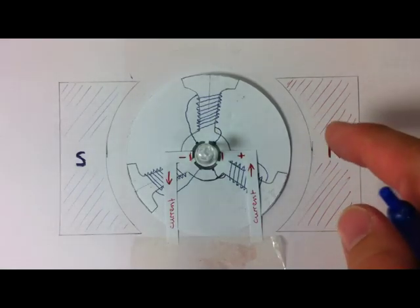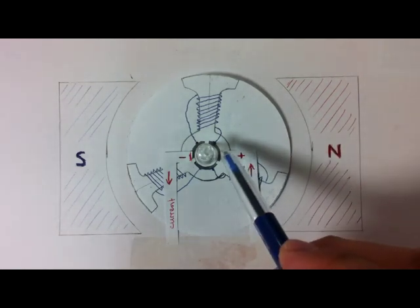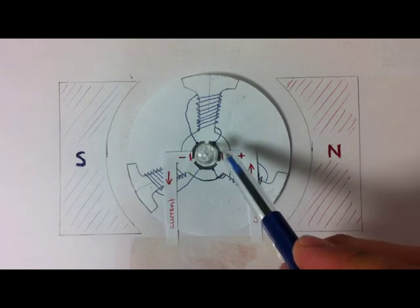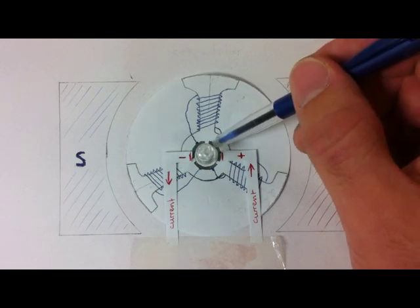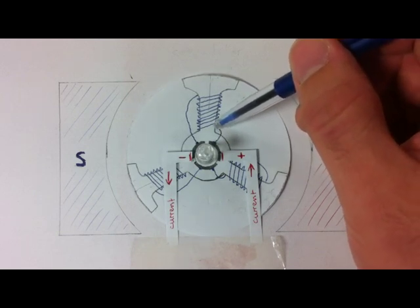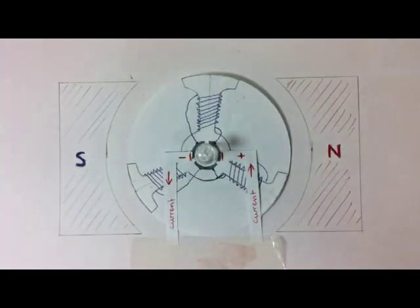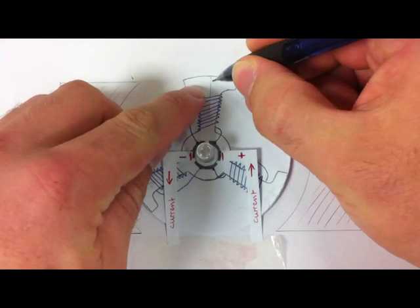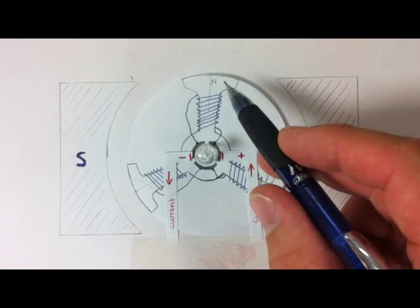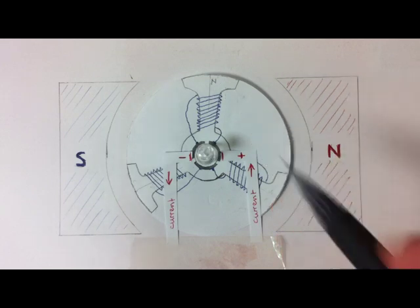So back to our diagram here, we have in this instance, current is flowing through this brush here, and into this plate of the commutator. And it's going, firstly, through that coil that way, it's going clockwise up that coil. Using our right-hand grip rule, we'll know that that will induce a north pole at there. In this arrangement, right now, in this particular stage of the rotation, there'll be a north pole here.